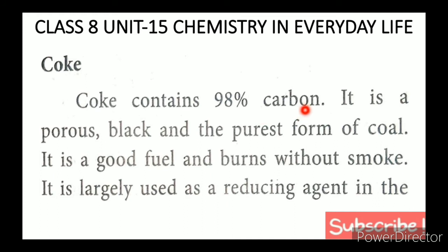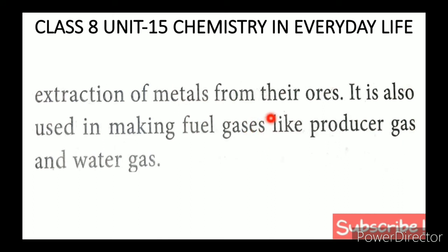Coke contains 98% carbon. It is a porous, black, and purest form of coal. Because it is porous and black, it is used for filter purposes. It is a good fuel that burns without smoke. It is largely used as a reducing agent in the extraction of metals from their ores. It is also used in making fuel gases like producer gas and water gas.